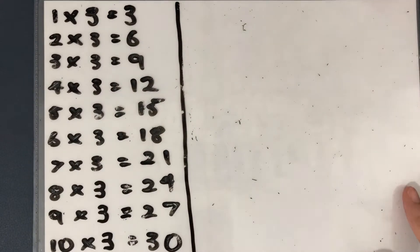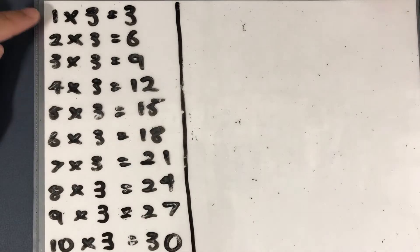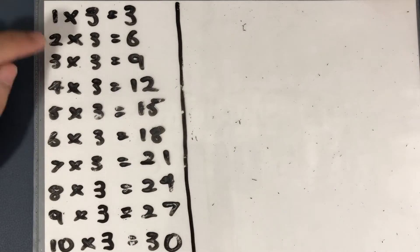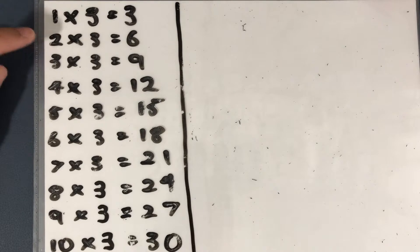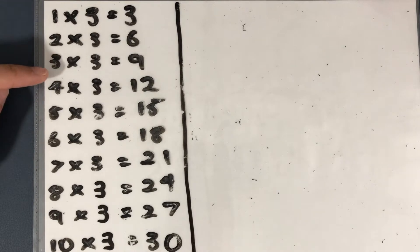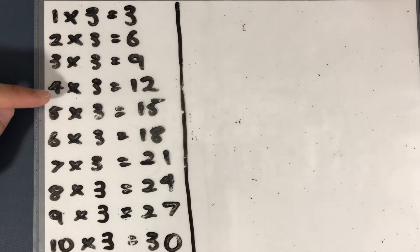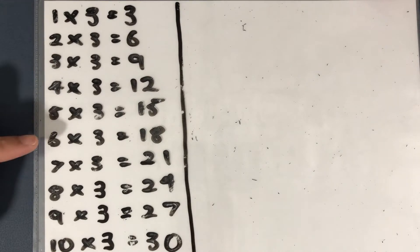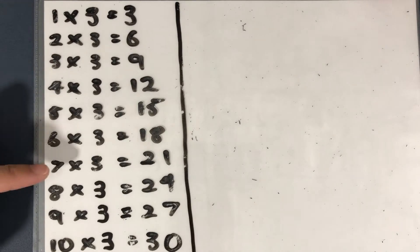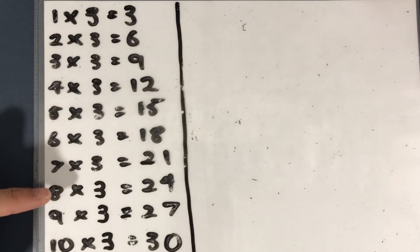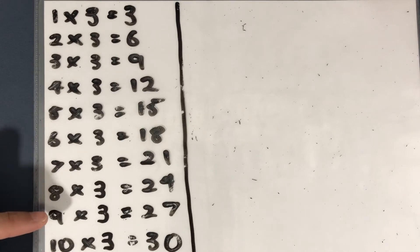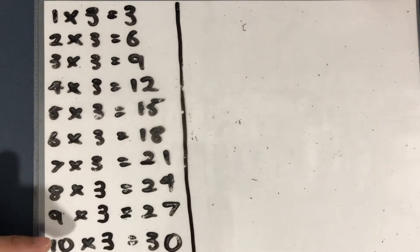Alright, let's read it very quickly together. 1 times 3 is 3, 2 times 3 is 6, 3 times 3 is 9, 4 times 3 is 12, 5 times 3 is 15, 6 times 3 is 18, 7 times 3 is 21, 8 times 3 is 24, 9 times 3 is 27, and 10 times 3 is 30.